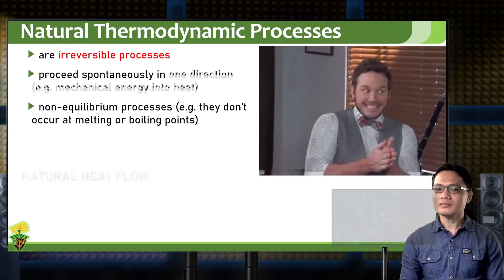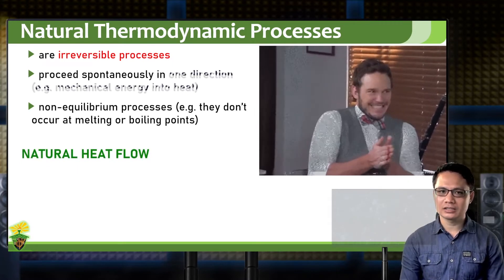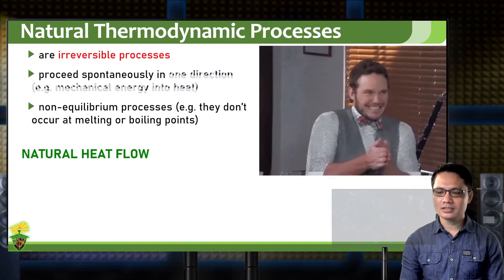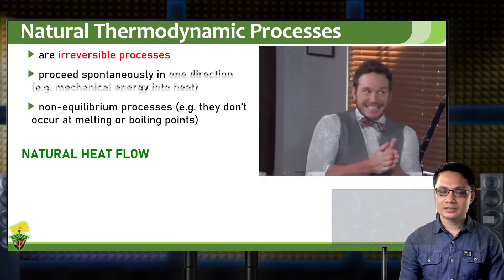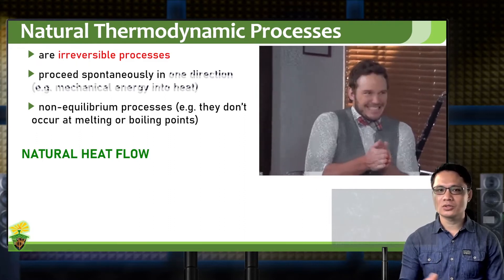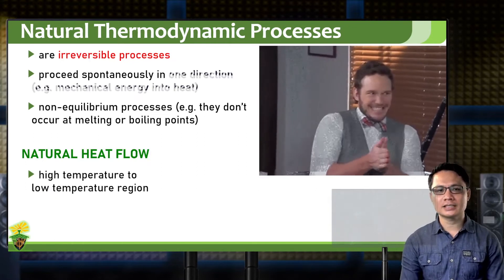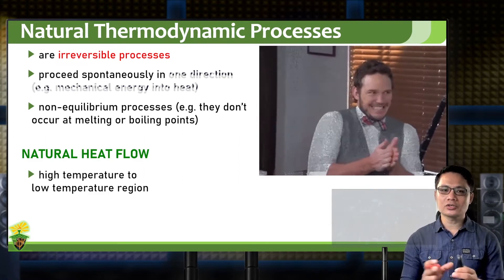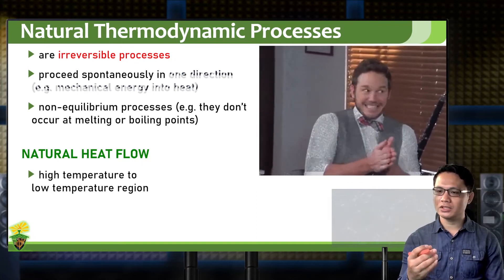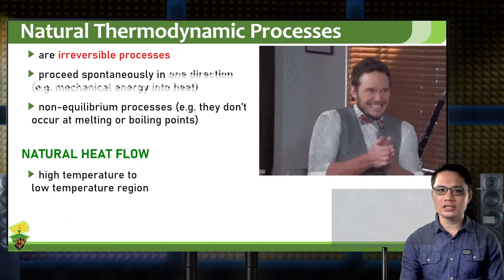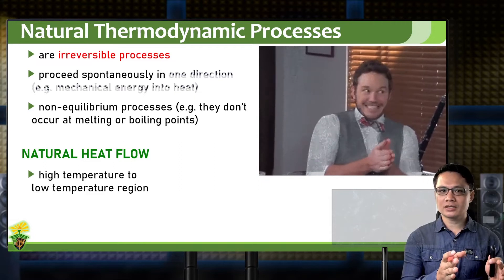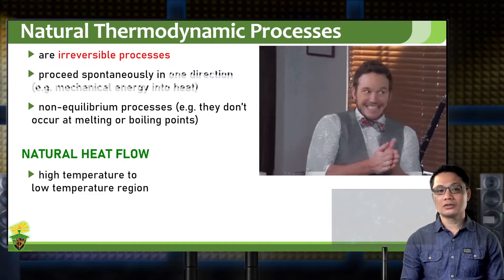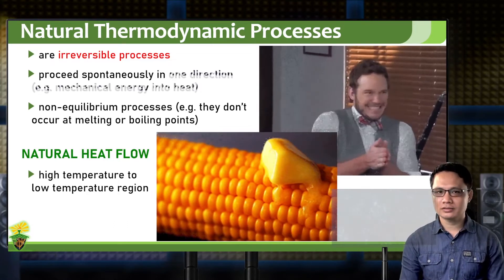The natural flow of heat is what we commonly experience and intuitively understand about the direction of thermodynamic processes. Heat energy flows from a region of high temperature to a region of low temperature. For example, if we have a system with both high-temperature and low-temperature regions, we understand that energy transfers from the hotter portion to the cooler portion.